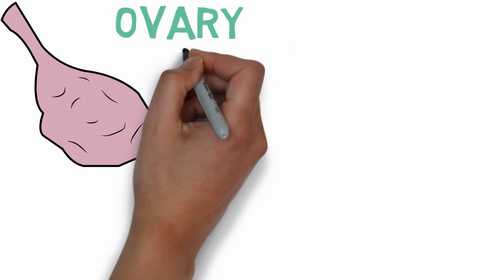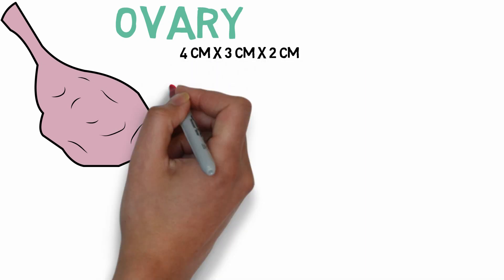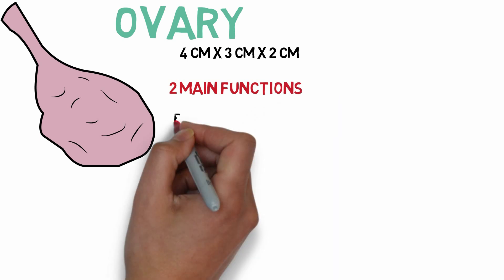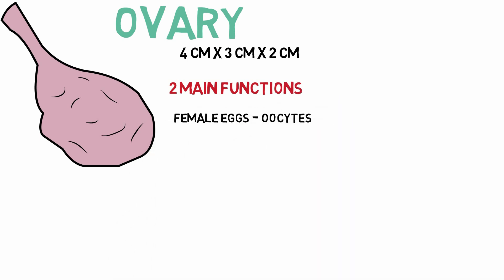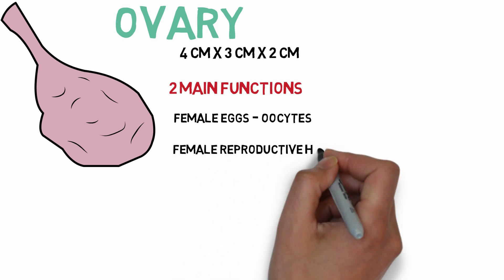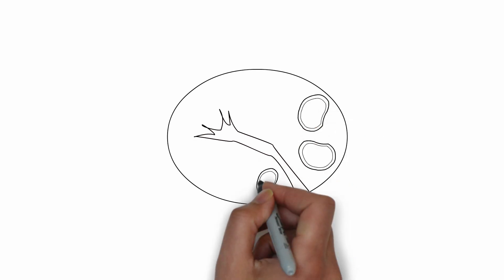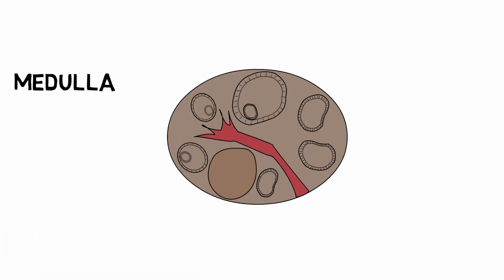The ovary is the main reproductive organ, measuring 4 x 3 x 2 centimeters. It has two main functions: first, it produces the female eggs also known as oocytes; second, it produces the female reproductive hormones estrogen and progesterone. Looking at the cross-section of the ovary, it is made up of the central medulla and the outer part known as the cortex.